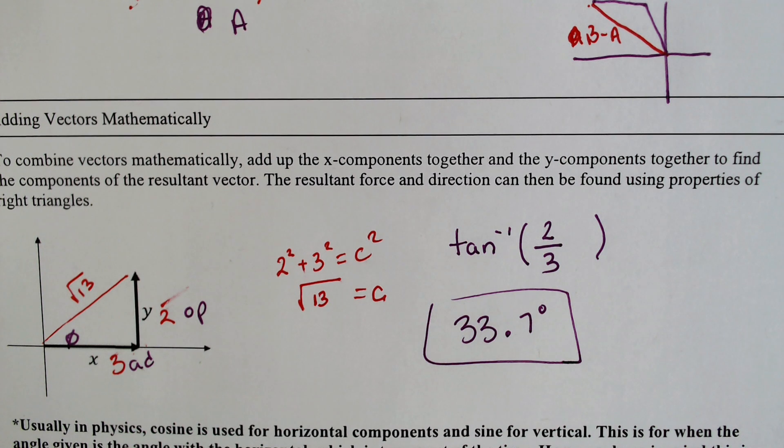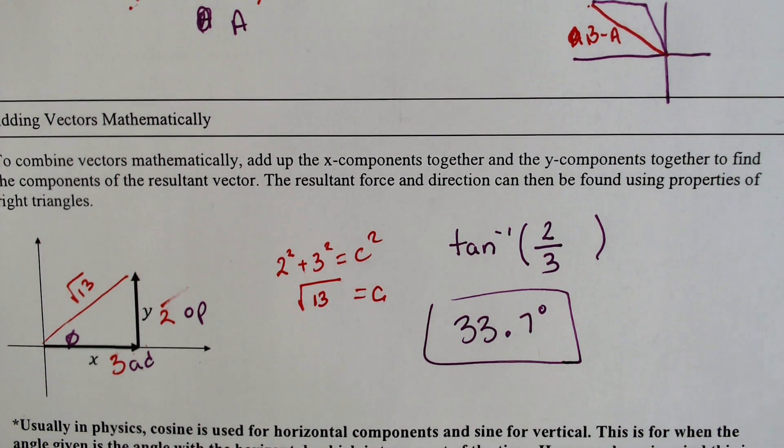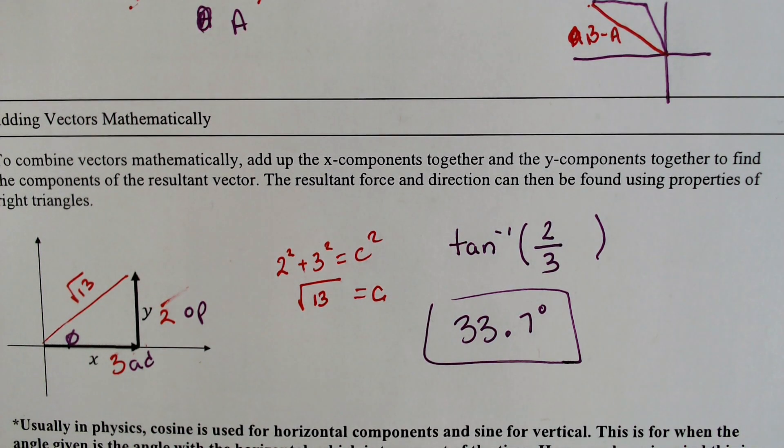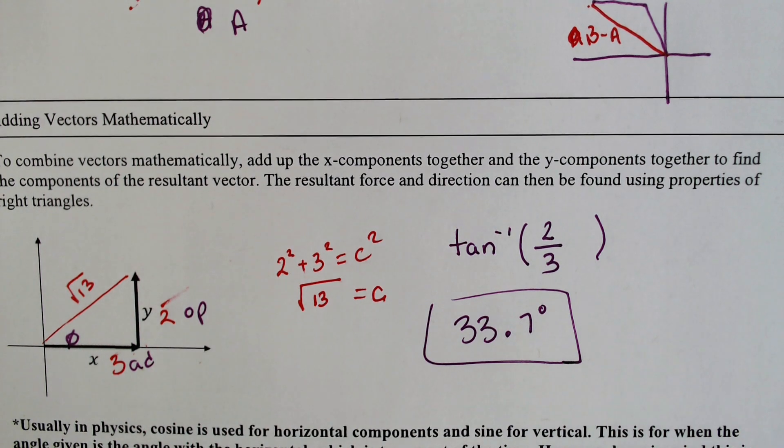So that's going to do it for this one. In the next episode, we're going to be using these resultant vectors to be actually adding the components together using sine, cosine, and tangent. And it's going to get a little more intense. So until then, stay positive, everybody. And I will see y'all later.